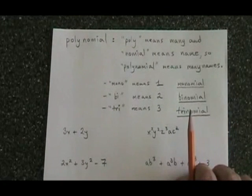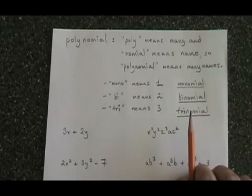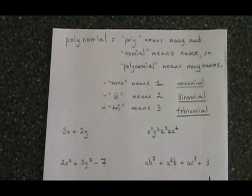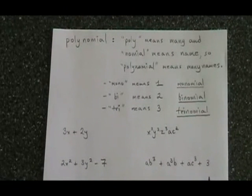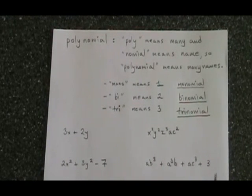A polynomial expression that only has one term is therefore a monomial. A polynomial expression with two terms is a binomial. With three terms, it's a trinomial. And any more than three, we just use the generic term polynomial.